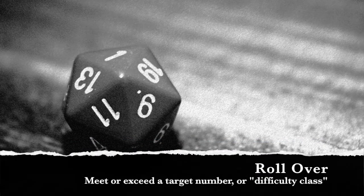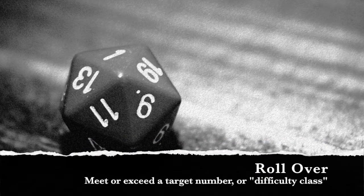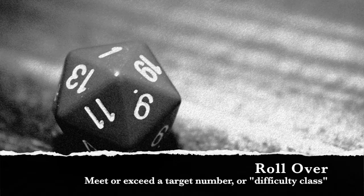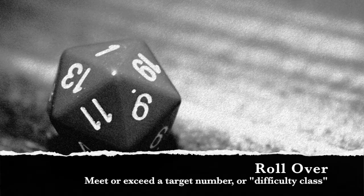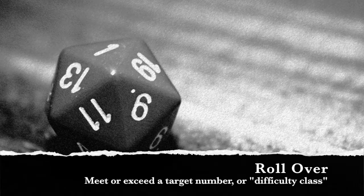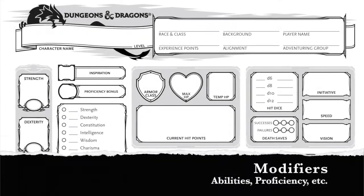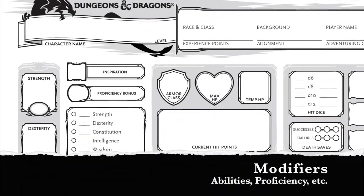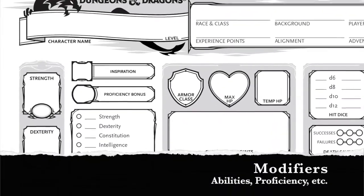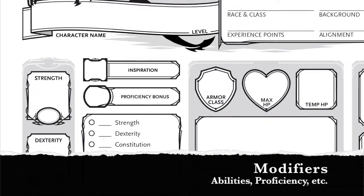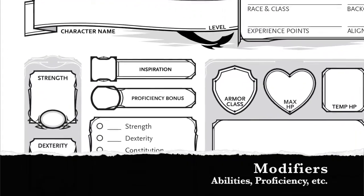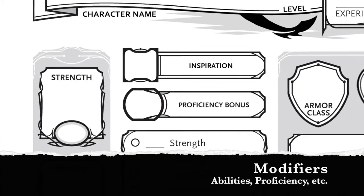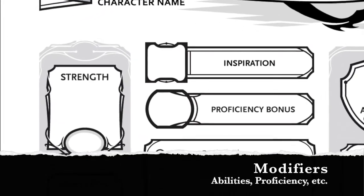After you roll your dice, you're looking to meet or exceed a target number called a difficulty class. Higher results are always better, hence roll over. You're not just taking the value of the die you roll, though. Your total result also includes bonuses and penalties, mostly from things on your character sheet like your ability scores and proficiency modifier. The system tries very hard to keep these numbers to a minimum, but there is no hard and fast limit.